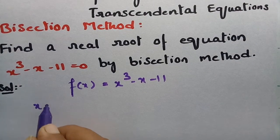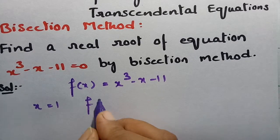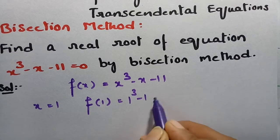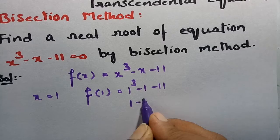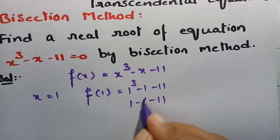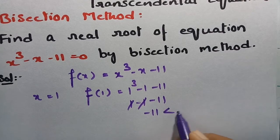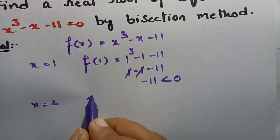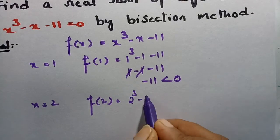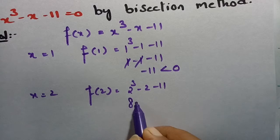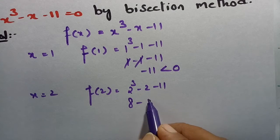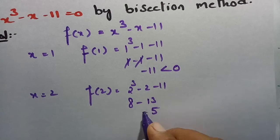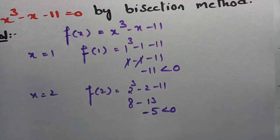First, going with x = 1: f(1) = 1 cubed minus 1 minus 11 = 1 minus 1 minus 11 = minus 11, which is less than 0. Next, x = 2: f(2) = 2 cubed minus 2 minus 11 = 8 minus 13 = minus 5, which is also less than 0.